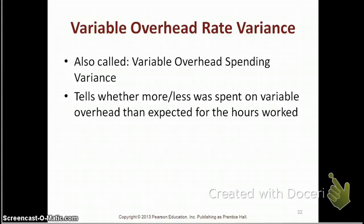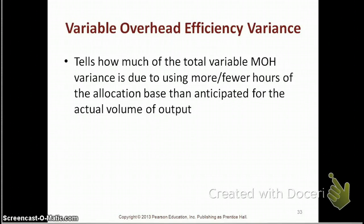For the variable overhead and fixed overhead, you are not expected to evaluate the variances. However, you do need to know how to evaluate direct material and direct labor. I will show you these slides so that you can go through them if you want, but I will not evaluate you on those. You do need to know what the two different overhead variances are — rate and efficiency. The efficiency variance tells us how much of the total variable overhead was due to using more or fewer hours of the allocation base than anticipated for the actual volume of output. You do not need to evaluate it, but you do need to know how to calculate it.